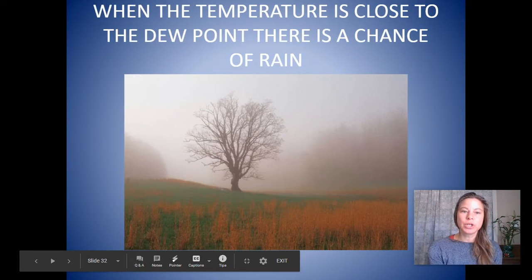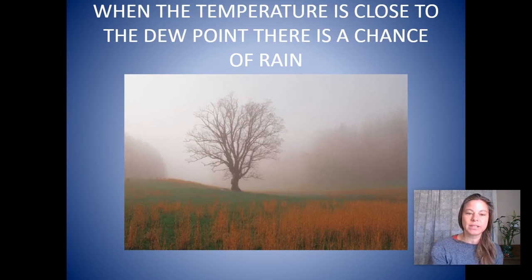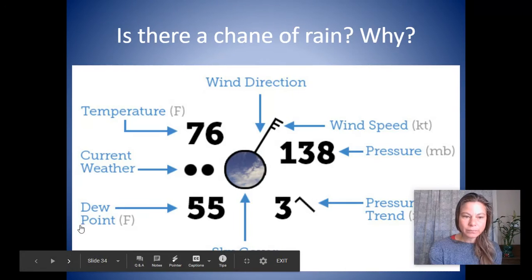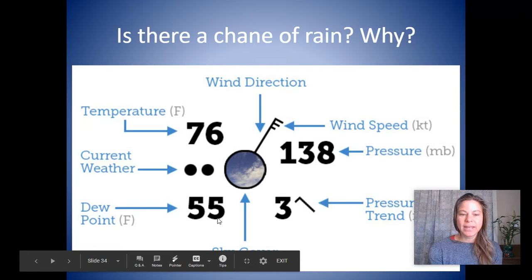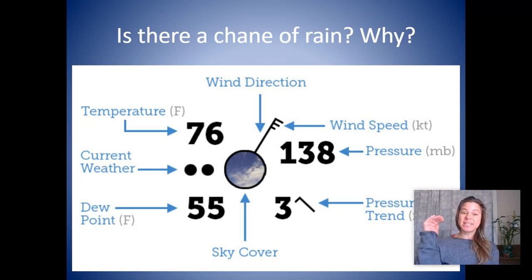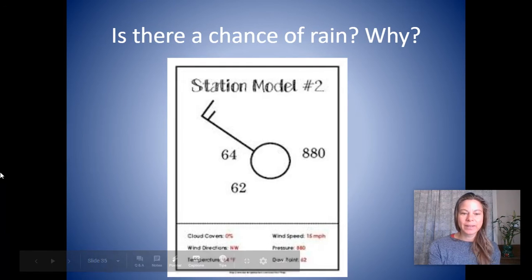So when the temperature is close to the dew point, there is a chance of rain. And that's what we need to know for the purpose of this lesson. So here we have, is there a chance of rain? We have the temperature is 76 and the dew point is 55. Is there a chance that the temperature would be 76 degrees? Picture a 76 degree day. Maybe you're wearing a light little sweater like I am. Do you think it might drop all the way to 55 degrees? Probably not. So maybe slightly. So on a day like this, you might say there might be like a 5% chance of rain. But most likely it's going to be a pretty clear day.